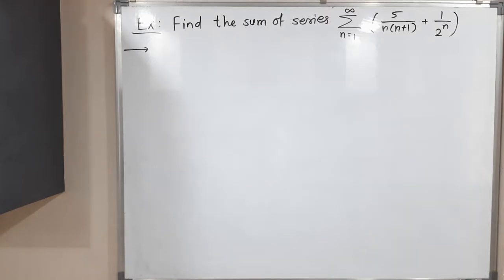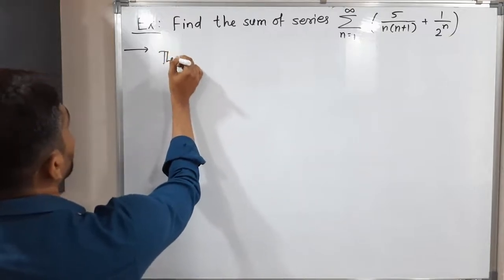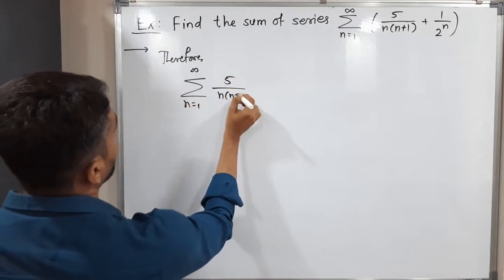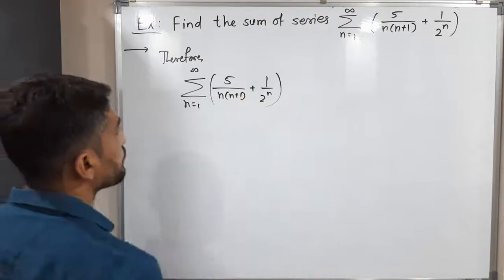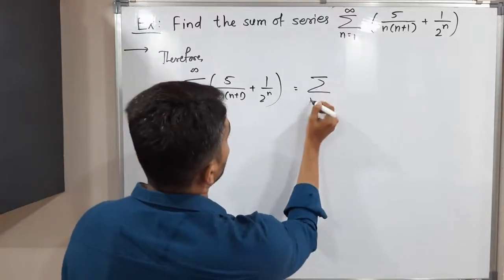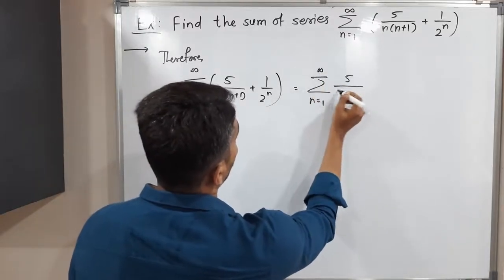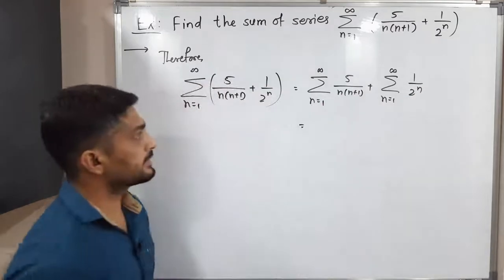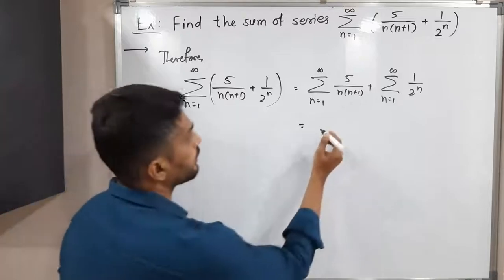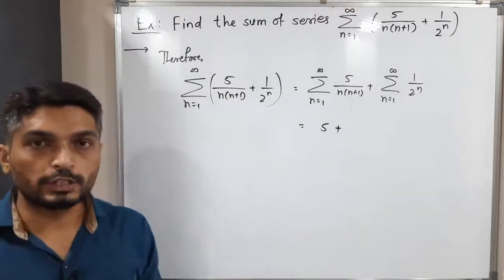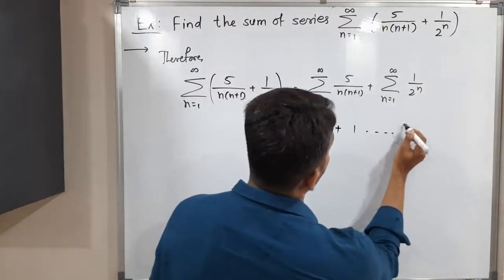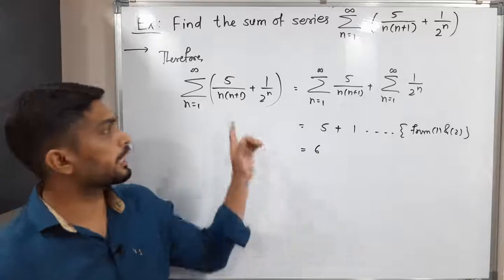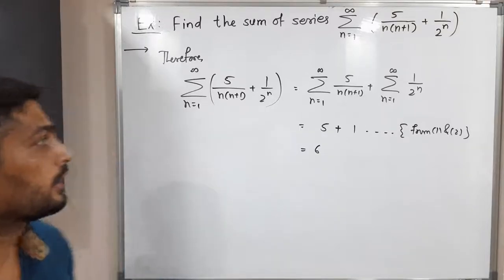Therefore we can write: summation n running from 1 to infinity of [5/(n(n+1)) + 1/(2^n)]. Since we have already proved both series are convergent, we can take separate summations — the first series converges to 5 and the second series converges to 1. So the total is 5 plus 1 equals 6. Therefore the given series is convergent and converges to 6, meaning the sum of this series is 6.